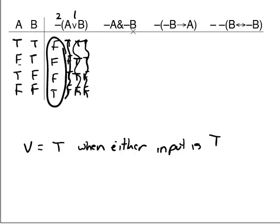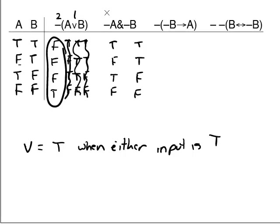Now let's look at dash-A ampersand dash-B. Underneath A, write true, false, true, false. Underneath B, write true, true, false, false. The ampersand is the main connective, so it has to be last. Therefore, let's work on the first dash, then the second dash, then finish up with the ampersand.